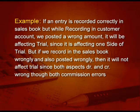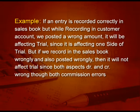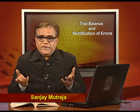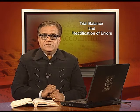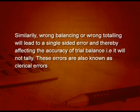For example, if an entry is recorded correctly in the sales book but while recording in the customer account we posted a wrong amount, it will affect the trial balance since it is affecting one side. But if we record in the sales book wrongly and also posted wrongly, it will not affect the trial balance because both aspects are wrong — when debit is wrong and credit is wrong, the trial will tally, although it is wrong. These errors are also known as clerical errors.